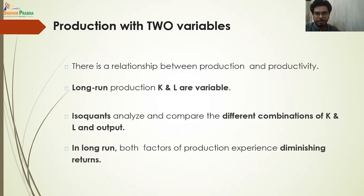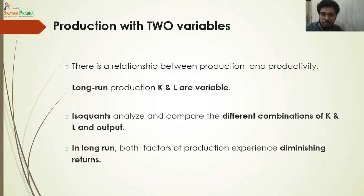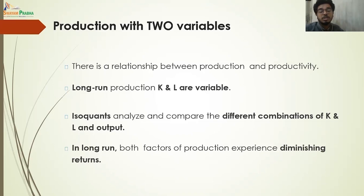Production with two variables in the long run is when we look at the relationship between production and productivity keeping both labor and capital as variable inputs. You can change the quantity of capital and labor anytime you want — if there is a sudden demand, you can change both capital and labor. That is the long run. If you cannot change labor but can change capital, or vice versa, then that remains a short-run period for that particular production process.